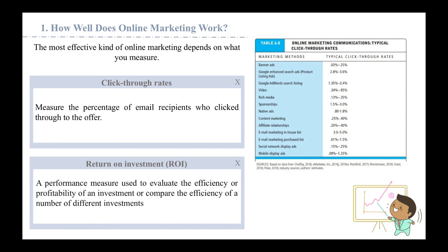Return on investment is a performance measure used to evaluate the efficiency and profitability of an investment or to compare the efficiency of different investments. ROI tries to directly measure the amount of return on a particular investment relative to its cost. This measurement clearly shows how effective online advertising is, and marketing executives will spend more on digital advertising as the ability to measure ROI improves.